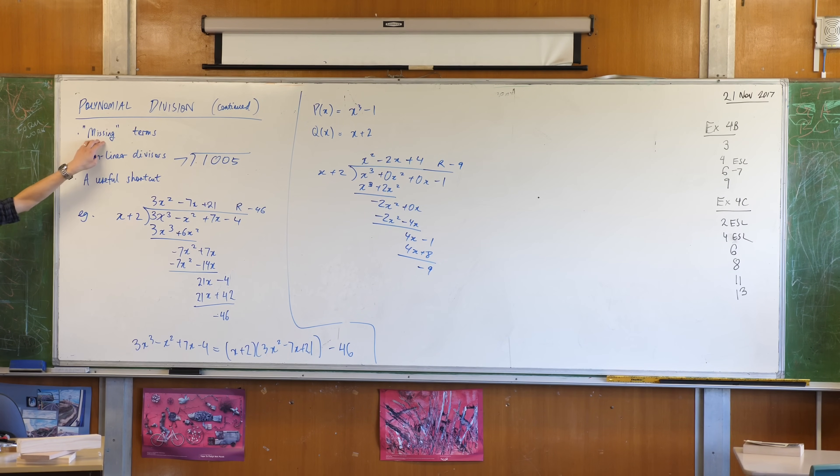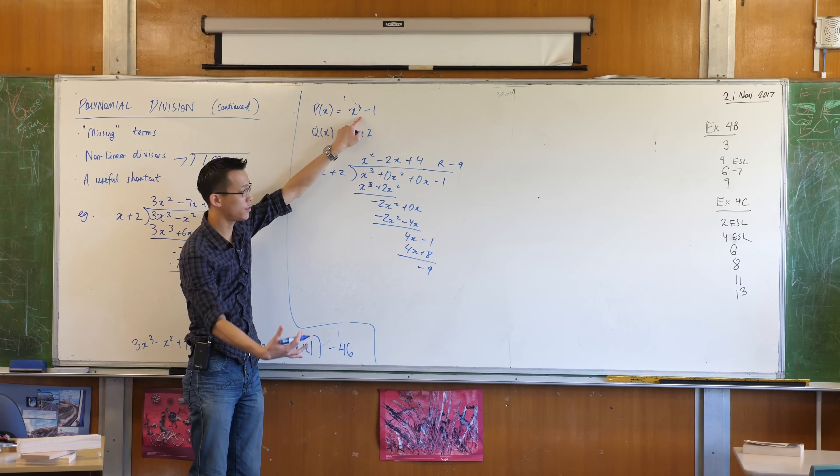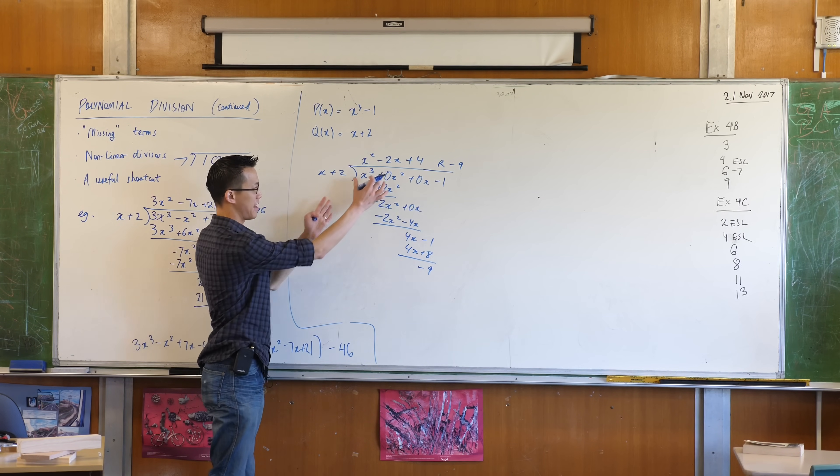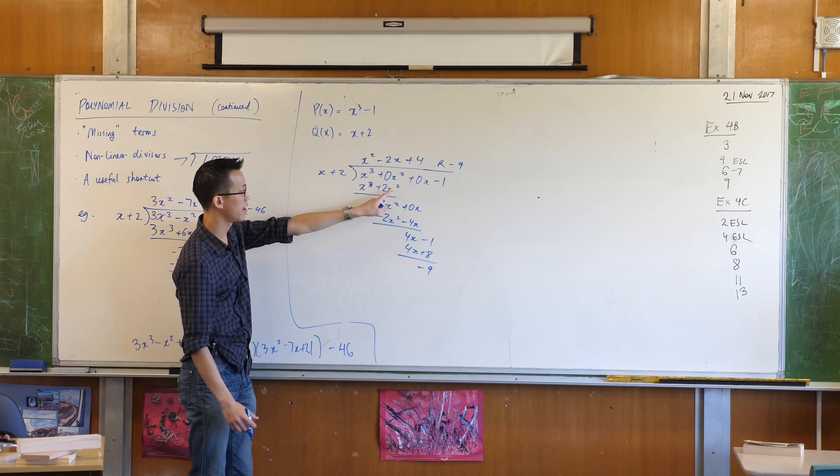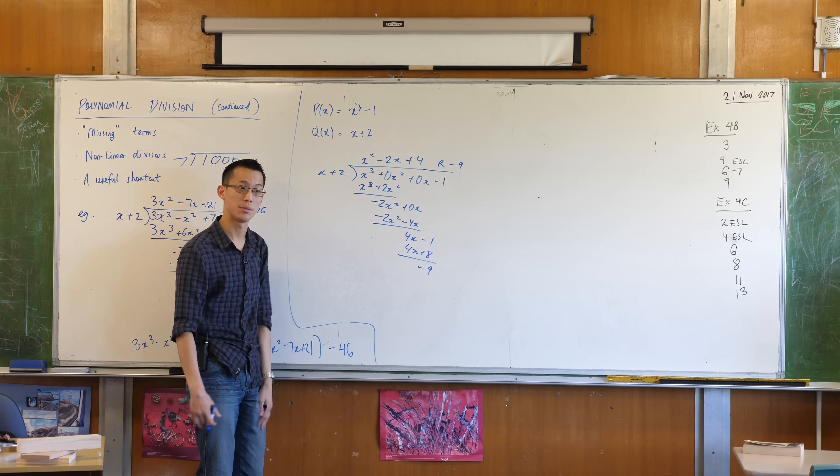Are you okay with that? So, missing terms. Please take note. They're not there, but when you do the division, you must say that there's nothing there, because that's obviously part of the process. You can see where that 0x squared has to be used, and that 0x also has to be used.